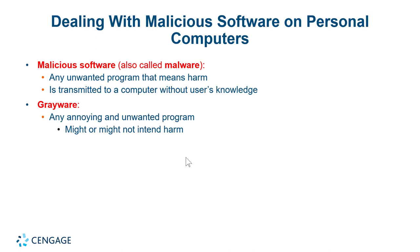Dealing with malicious software: malware is any program that means harm and is transmitted to a computer without the user's knowledge. Grayware is annoying software that might or might not have intended harm — for example, apps on your phone that get all your contacts and upload them, scan your clipboard continuously, access your keyboard, or want your precise location all the time even when they have no reason to know it. Phone operating systems are getting better about warning you when apps want those kinds of access.